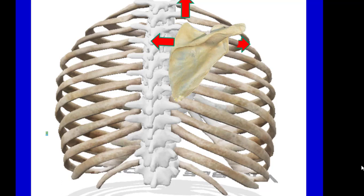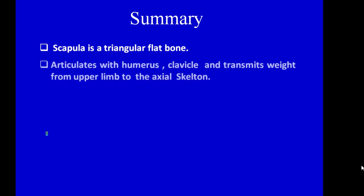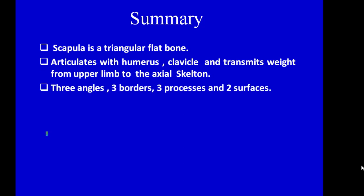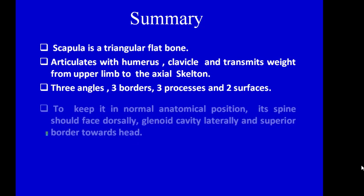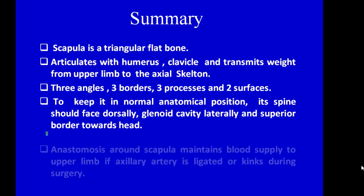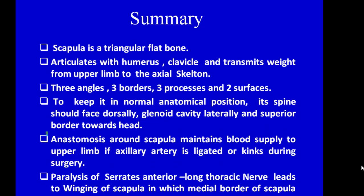To summarize: the scapula is a triangular flat bone. It articulates with the humerus and clavicle and transmits weight from the upper limb to the axial skeleton. It has three angles, three borders, three processes and two surfaces. The spine should face dorsally, glenoid cavity laterally, and the superior angle towards the head. Anastomosis around the scapula maintains blood supply to the upper limb if the axillary artery is ligated. Paralysis of serratus anterior, supplied by the long thoracic nerve of Bell, leads to winging of the scapula, in which the medial border becomes prominent.